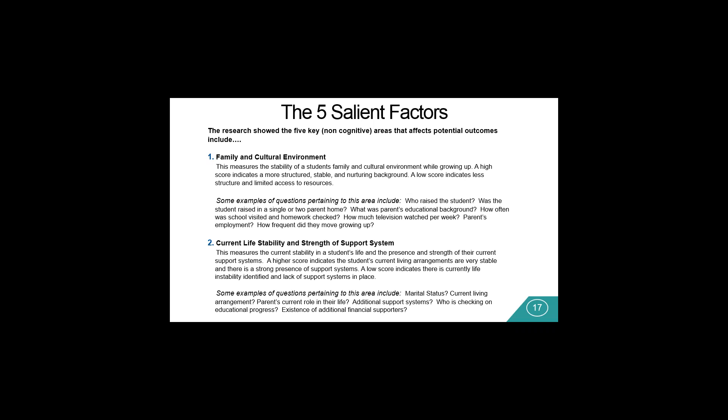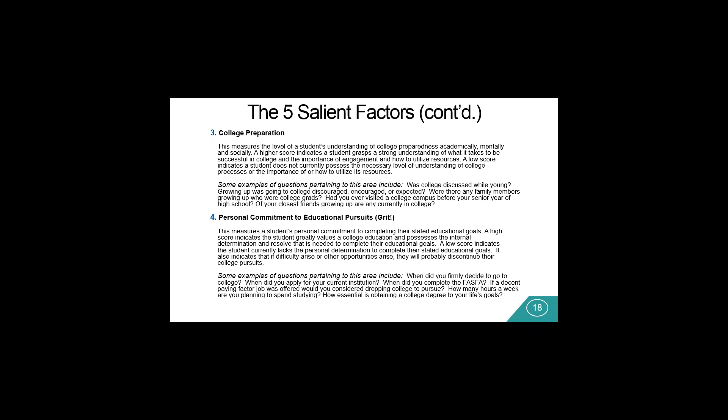The second level is current life stability and strength of support system. Our research found this is critically important to determining how successful they'll potentially be in higher education. This measures the current stability in a student's life and the present strength of their current support systems. A higher score indicates the student's current living arrangements are very stable and there's a strong support system in place even off campus — people checking on their progress, holding them accountable, frequent parental communication, and the existence of additional financial support systems in case of a financial emergency. The third level is their college preparation from a non-cognitive perspective.